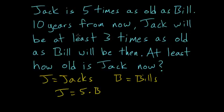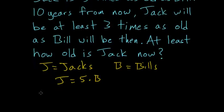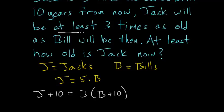And from the second line, ten years from now Jack will be at least three times as old as Bill will be then. So in ten years we can say Jack plus ten is equal to three times Bill's age in ten years. So we can say three times Bill plus ten, and the key word here is at least.